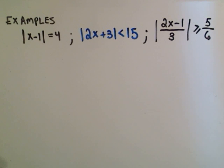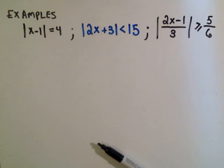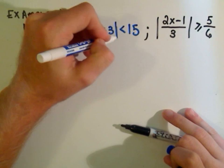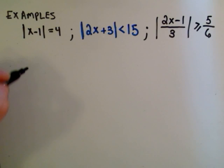So I'm going to do these three examples. x minus 1 equals 4. Absolute value of 2x plus 3 is less than 15. And then the absolute value of 2x minus 1 over 3 greater than or equal to 5/6.